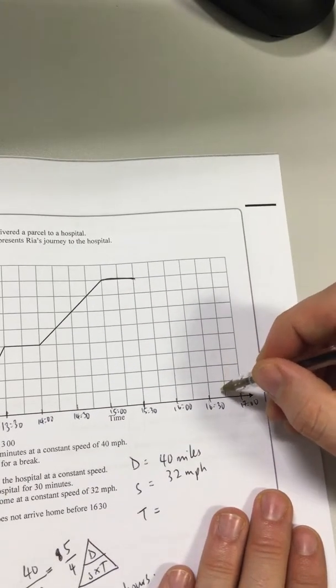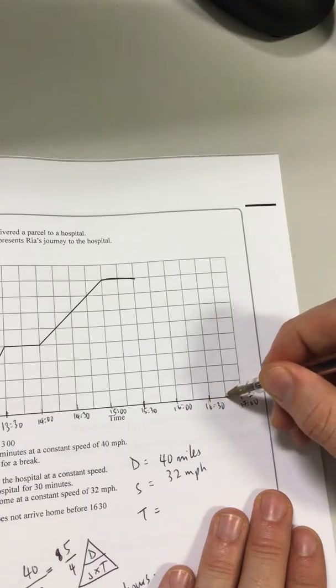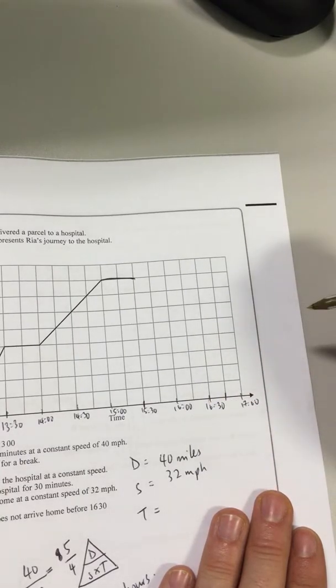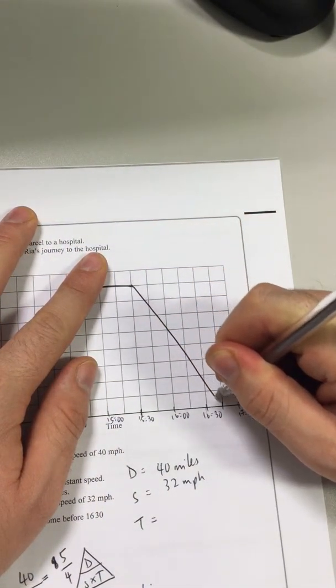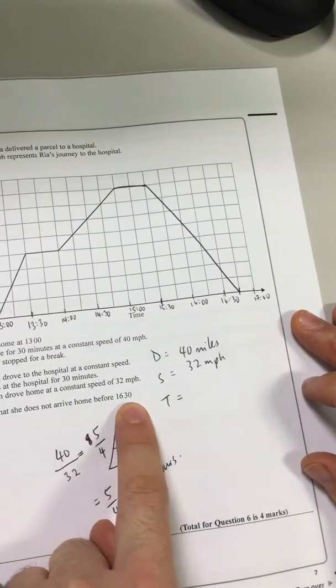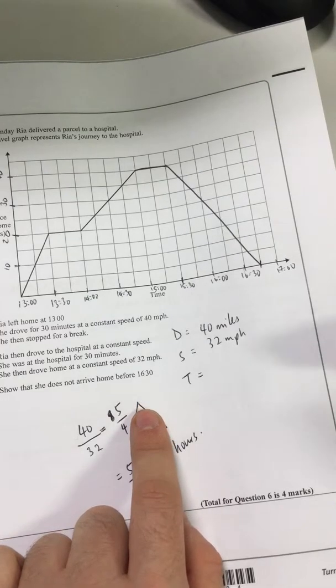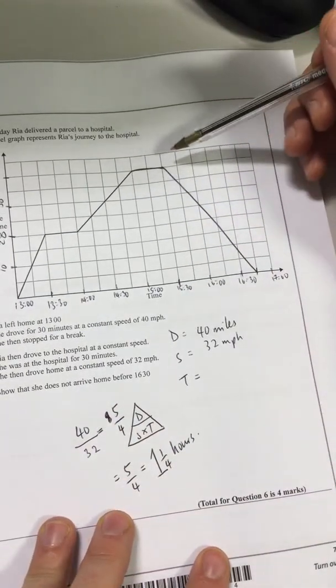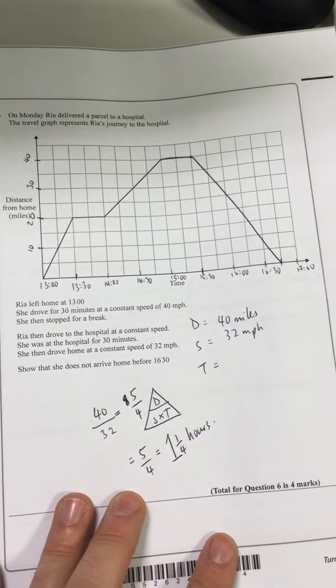So that journey shows - that should be a straight line - that she'll not arrive home before 16:30. In the back of my mind, I was thinking she had to arrive before, so I was like, oh dear, I think I've got it wrong. But you can see that she arrived after 16:30.